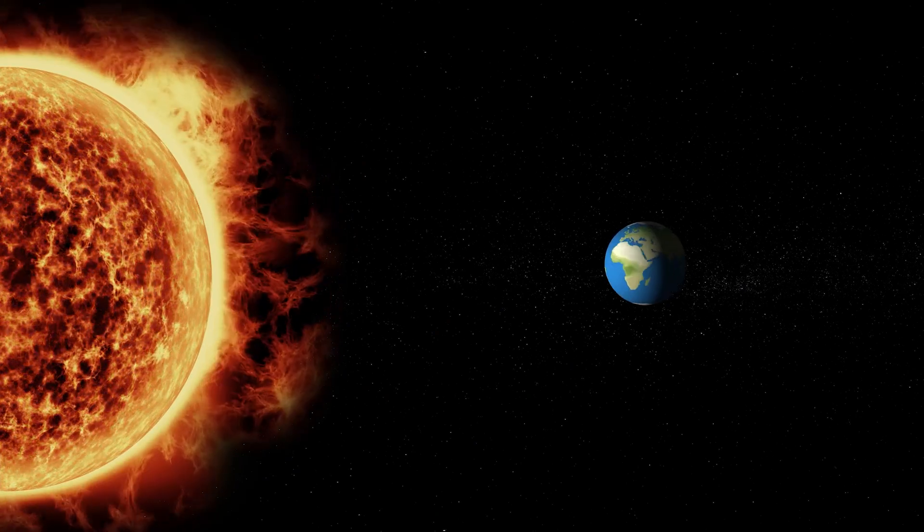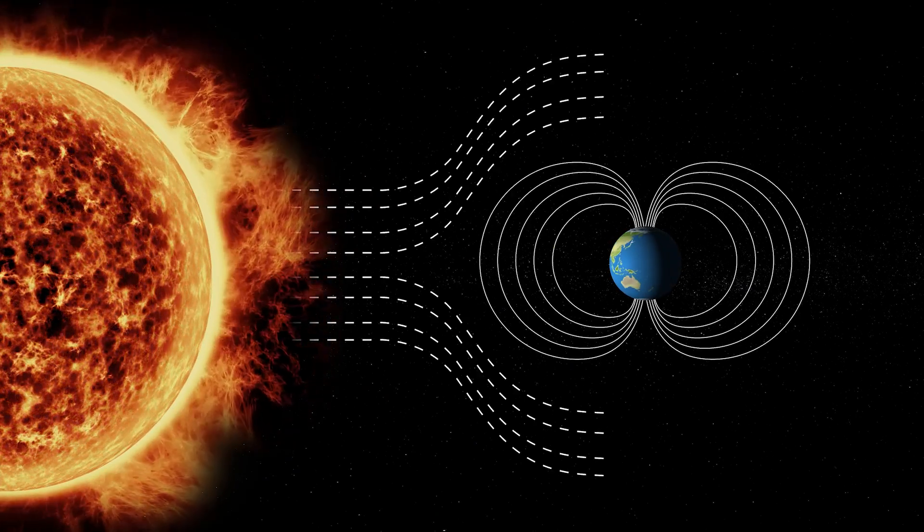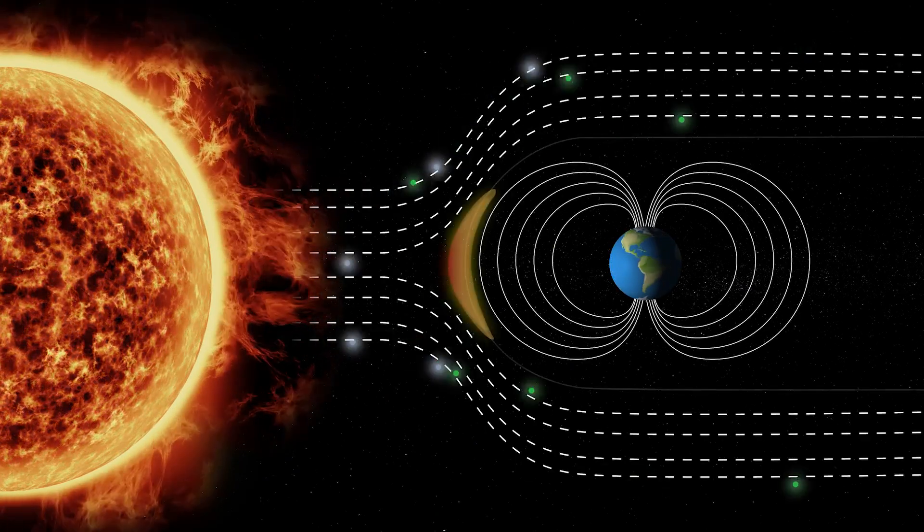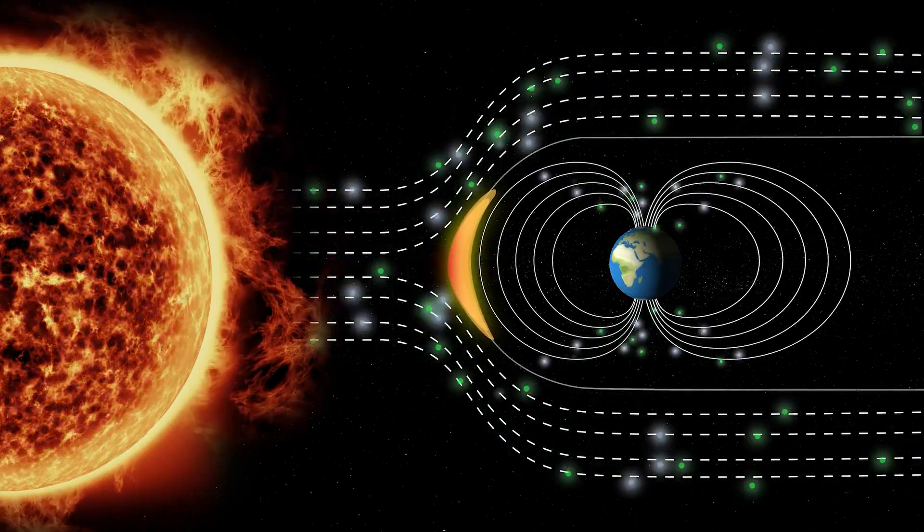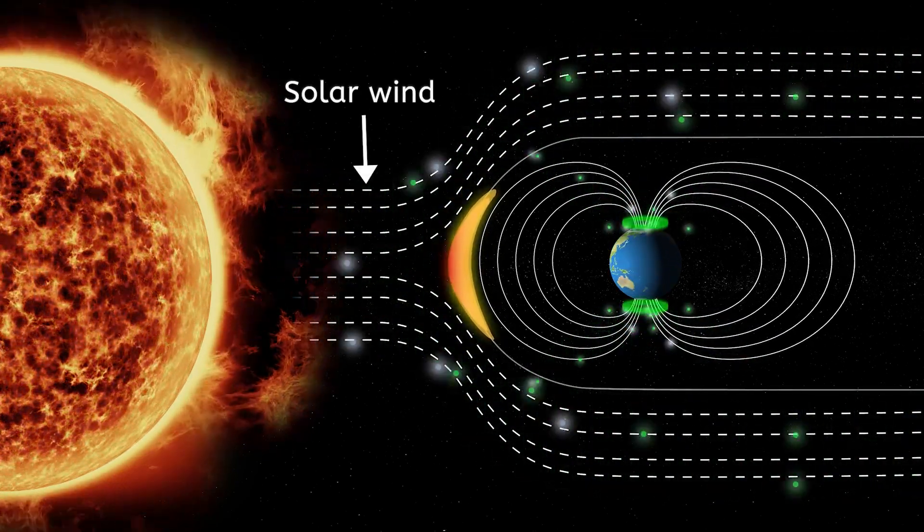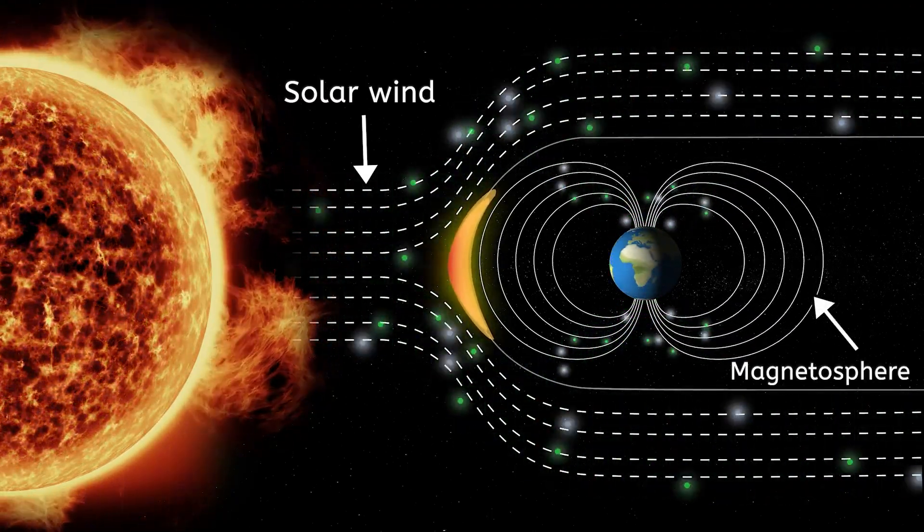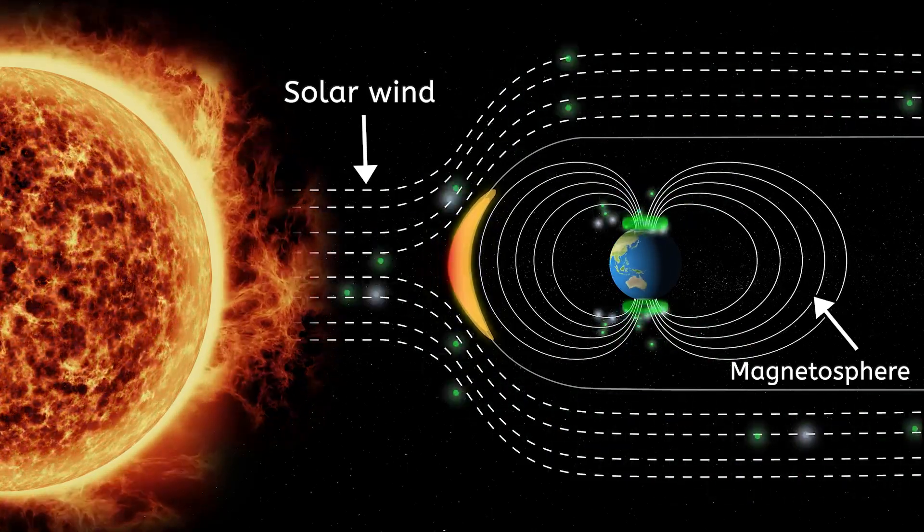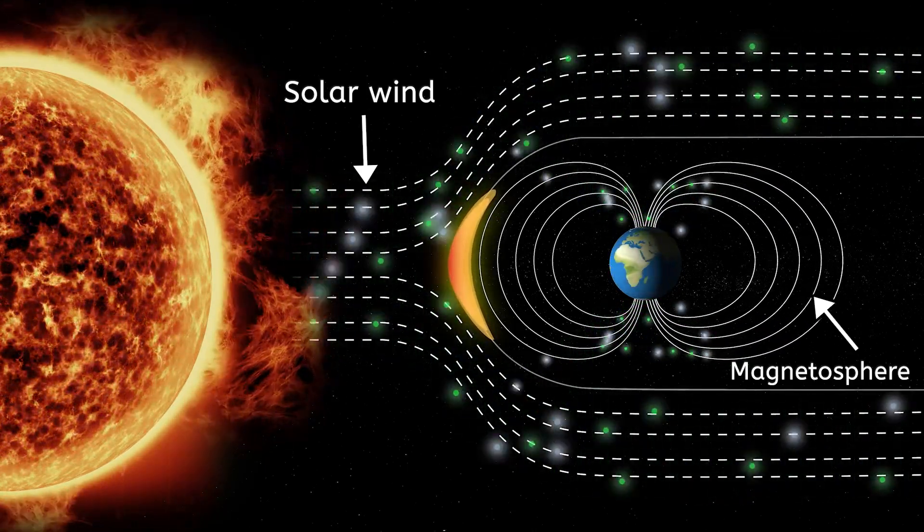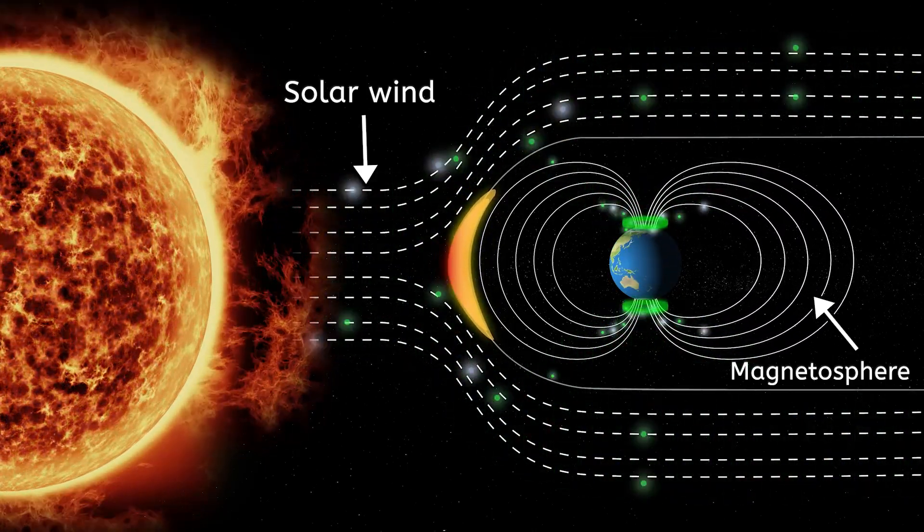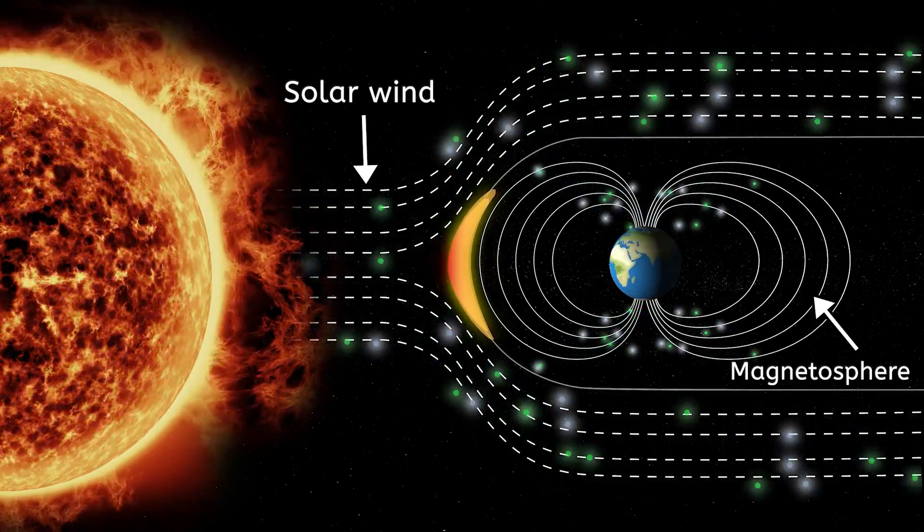At the heart of auroras is our sun, which continuously emits a stream of charged particles, known as the solar wind. As these particles approach Earth, they interact with our planet's magnetic field, known as the magnetosphere. Most times, our magnetosphere acts as a protective shield, deflecting these particles.